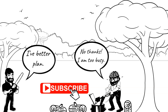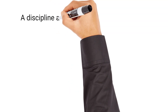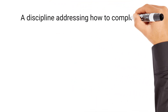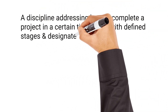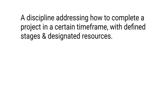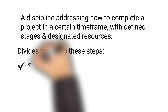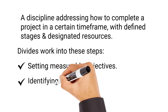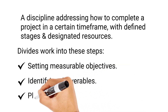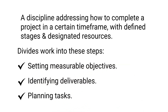Before jumping on to how the planning process works, let's first understand what is project planning. Project planning is a discipline addressing how to complete a project in a certain time frame, usually with defined stages and designated resources. One view of project planning divides the activity into several steps like setting measurable objectives, identifying deliverables, planning tasks, and so on.